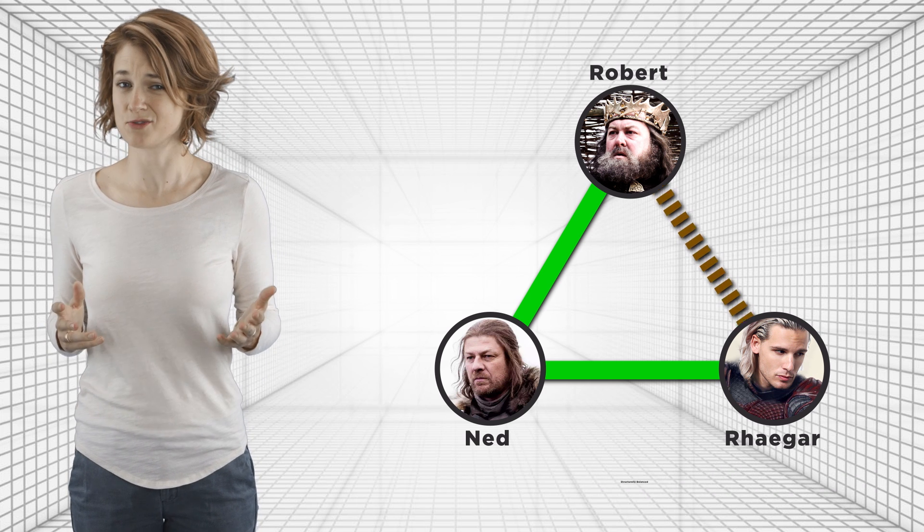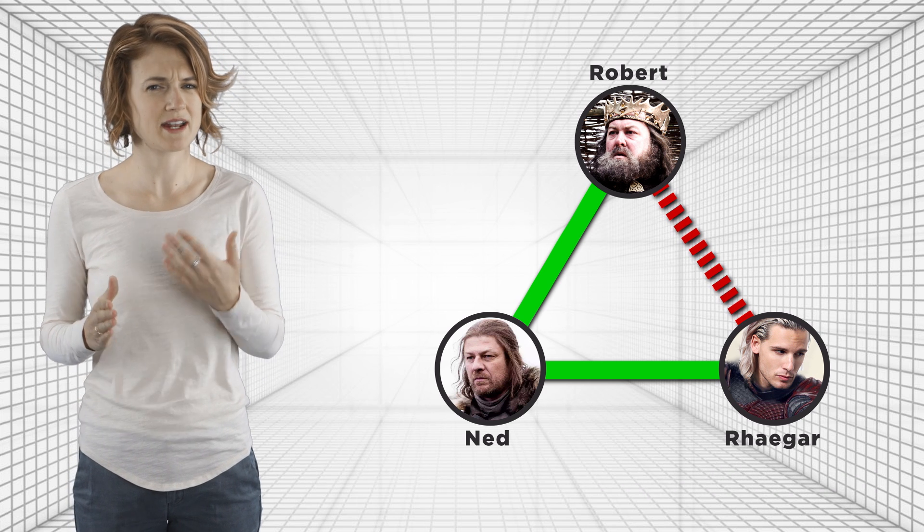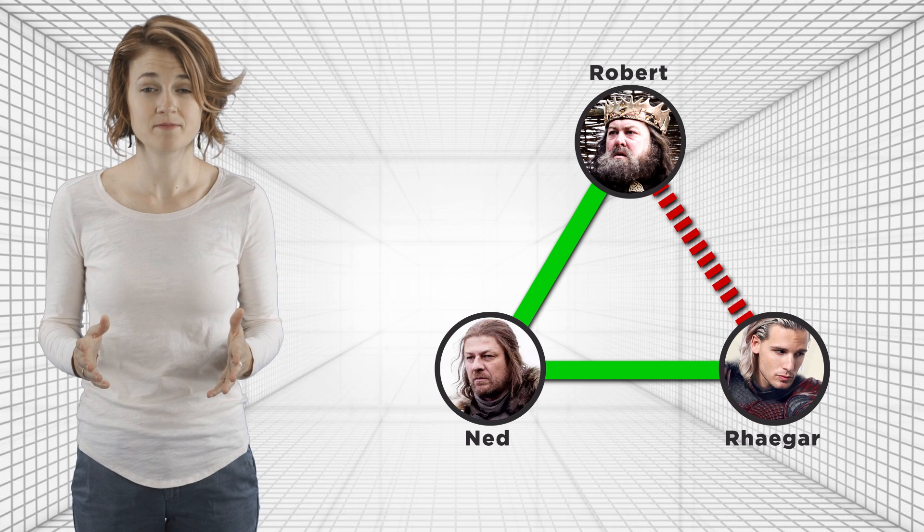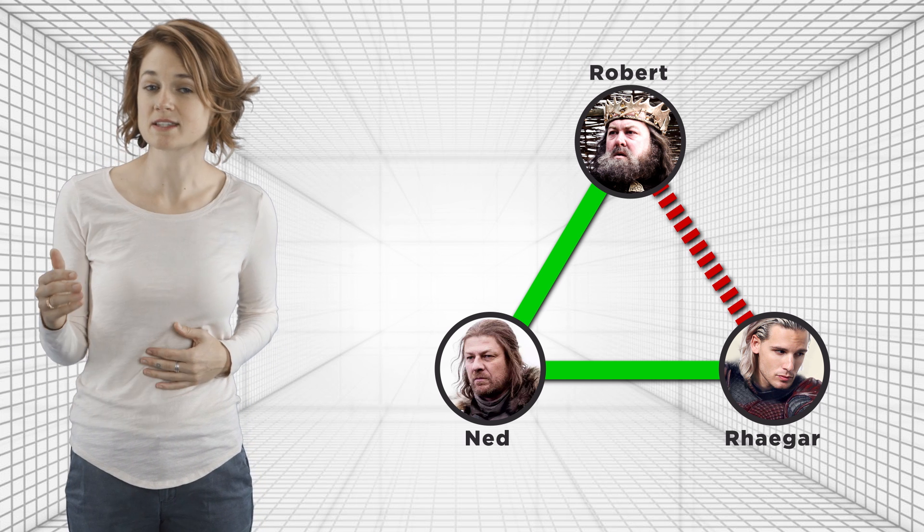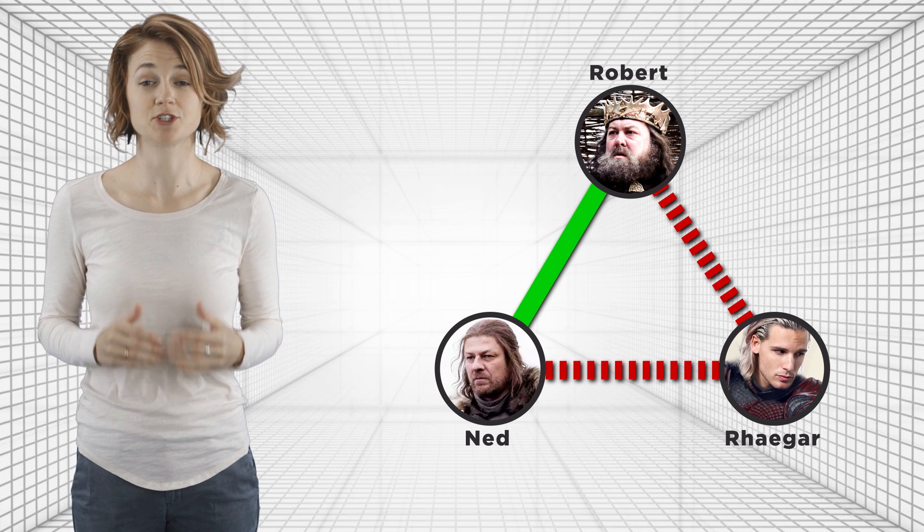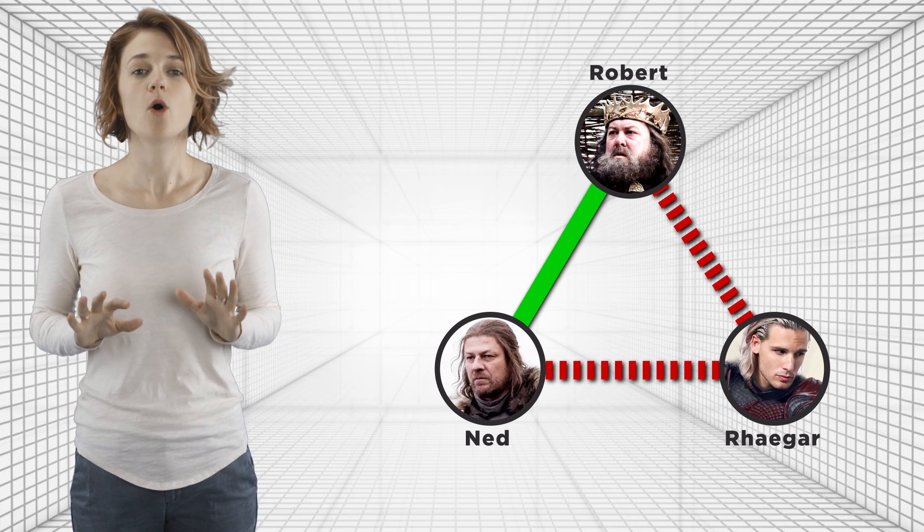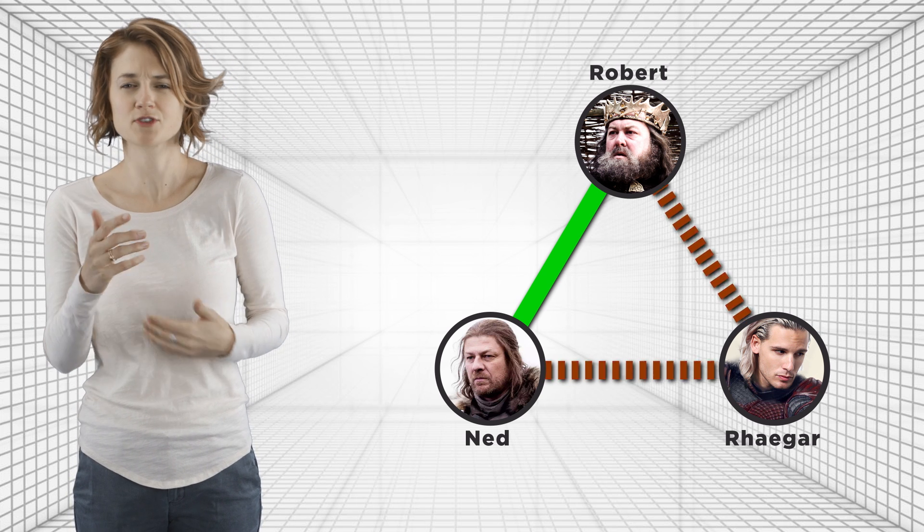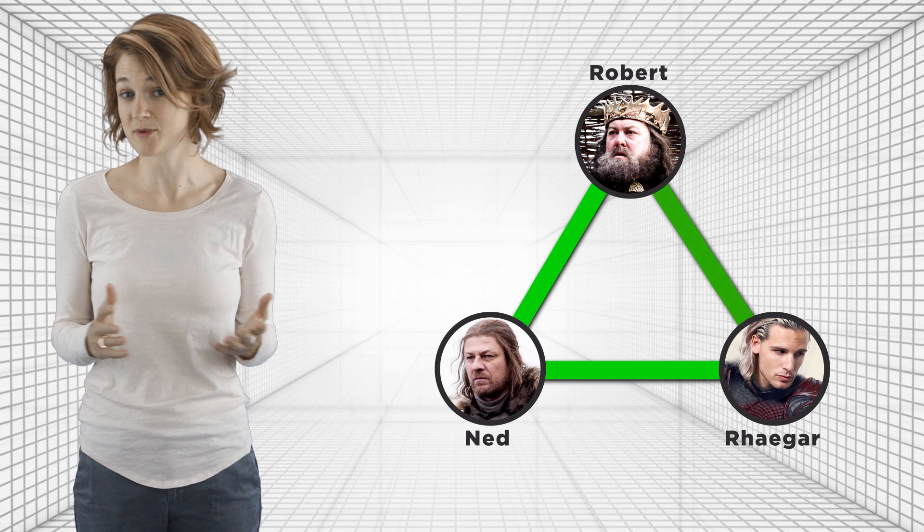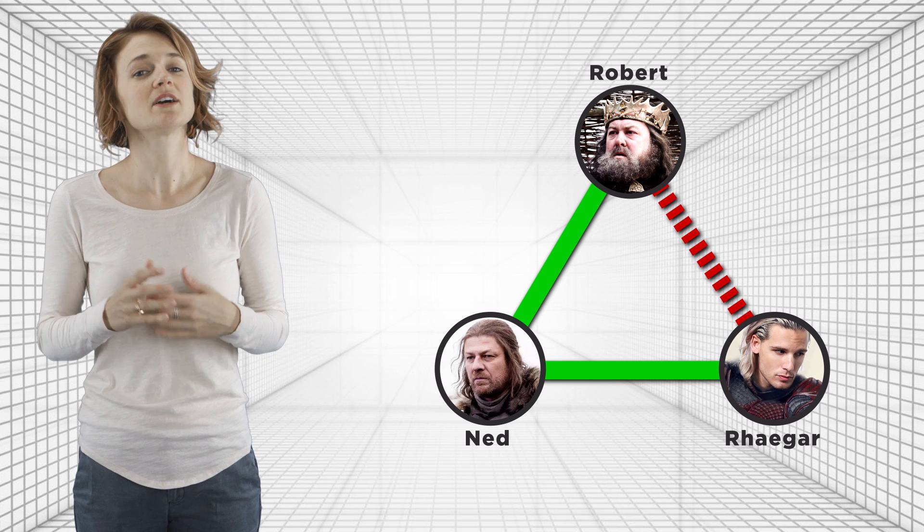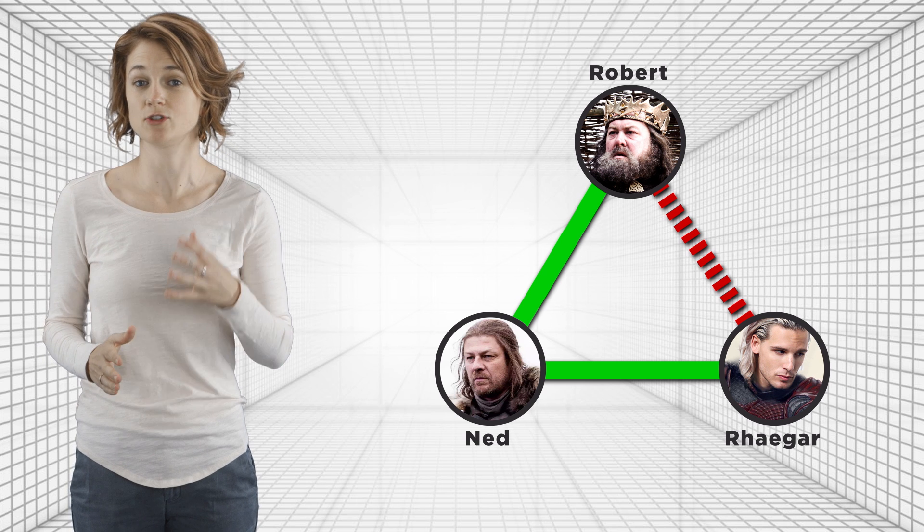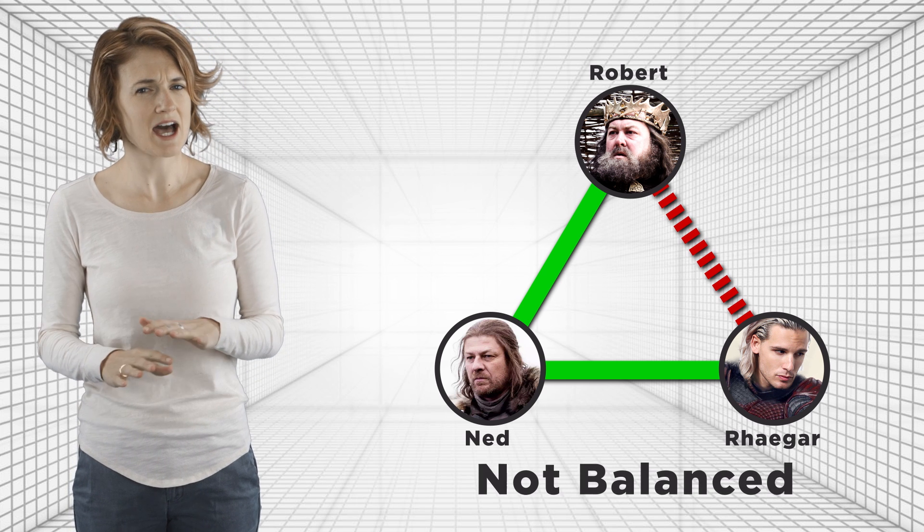But what if Robert and Rhaegar get into a fight? So there's one red and two green edges. That's an awkward position for Ned. He's likely to either pick a side and become enemies with Robert or Rhaegar, which means they'll switch to two red edges, or he'll convince them to become friends again and they'll switch back to all green. Unfortunately for Rhaegar, that's not the way the story played out. Because of this instability, we say that the triangle with one red and two green edges is not balanced.